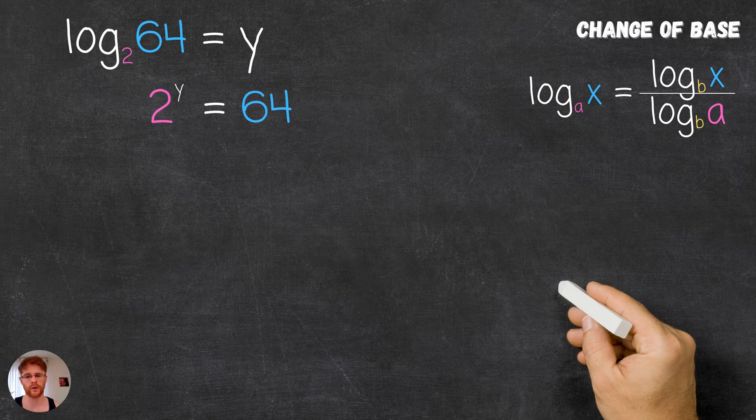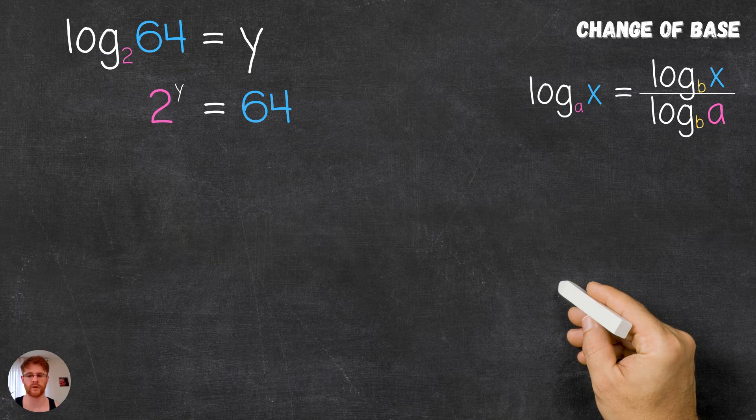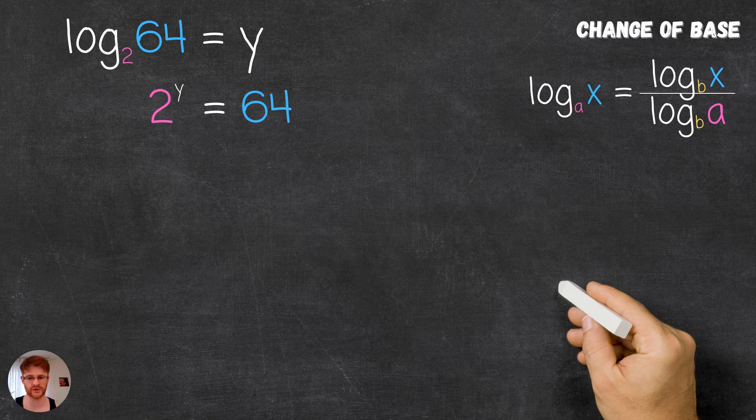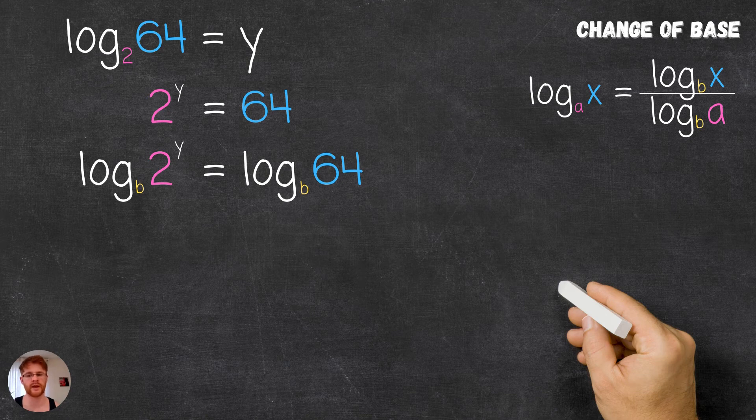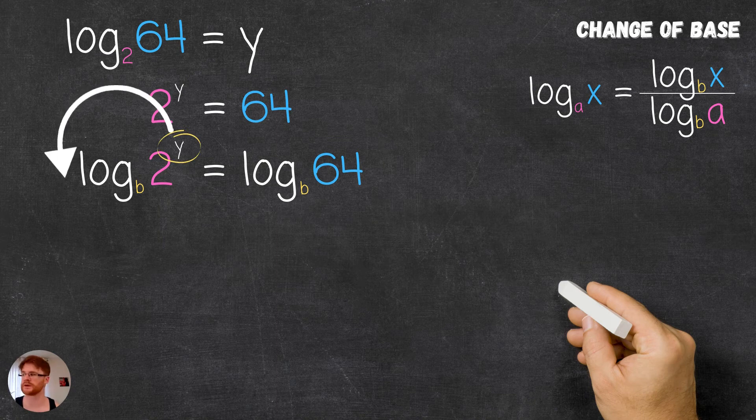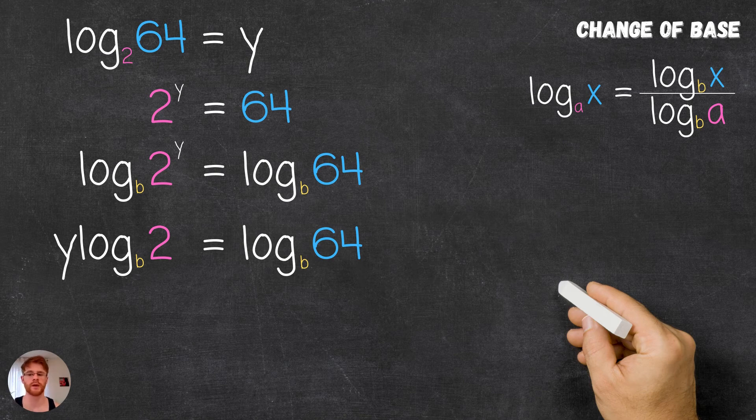Now we're going to take the log with some arbitrary base b of both sides of the equation. According to the third log law that we looked at in the previous video on log laws, we can move the exponent y in front of the log to give y multiplied by log base b of 2 equals log base b of 64.